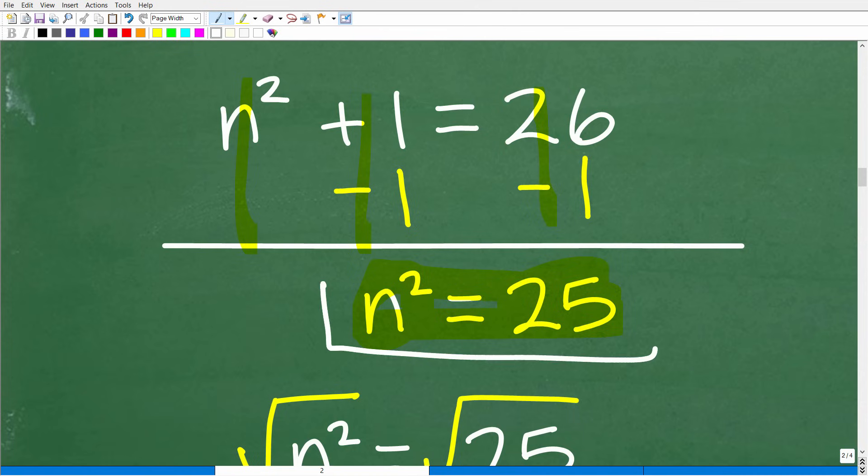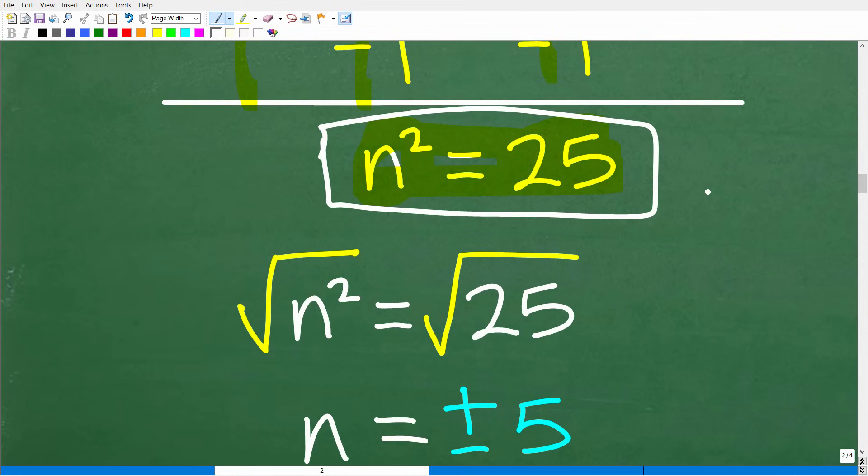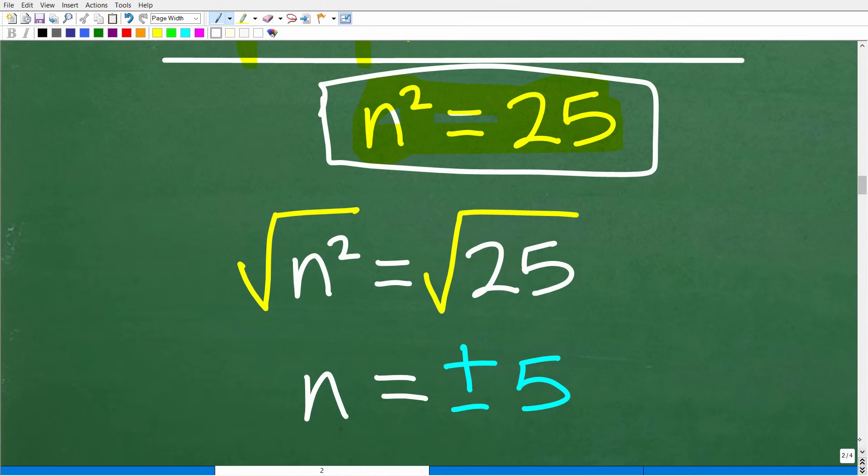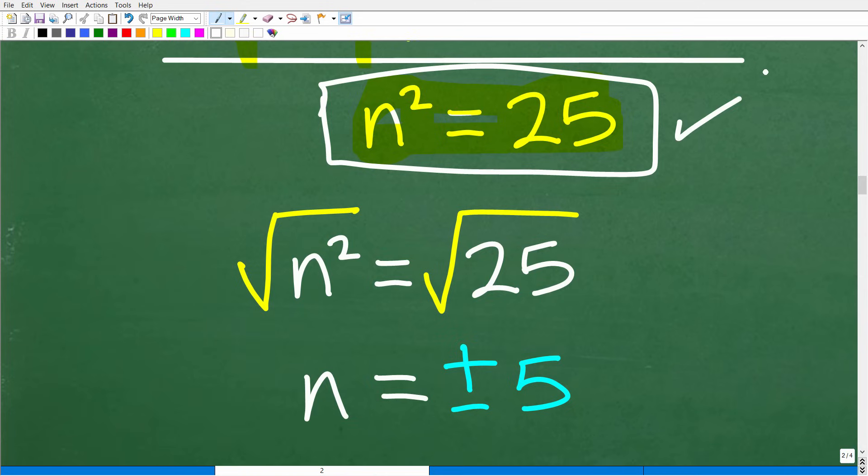A lot of you probably thought to yourself, a number squared that would have to be 25, so it would be 5 squared. That was good thinking, but it wasn't 100% right. Technically, 5 does work, but that is only half of the solution. To solve for n when we have n squared equals 25, we take the square root of both sides. The square root of n squared is n, and the square root of 25 is positive negative 5.